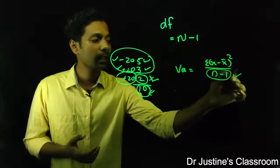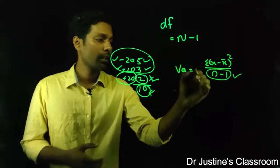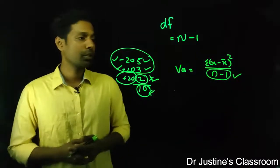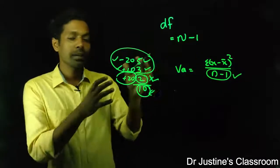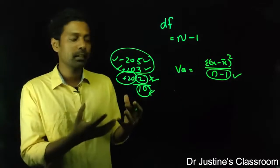So this n minus 1, this is the degree of freedom of the variance, and we generally consider this as the degree of freedom for the particular test. If you take the square root of it, it will become the standard deviation.